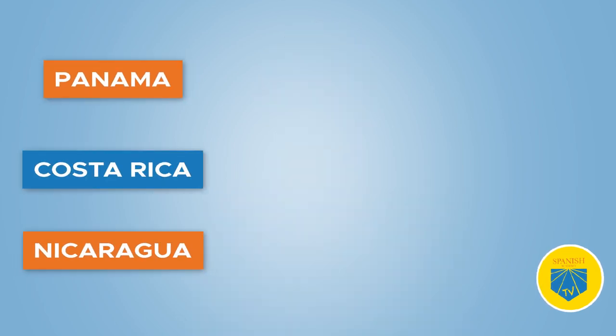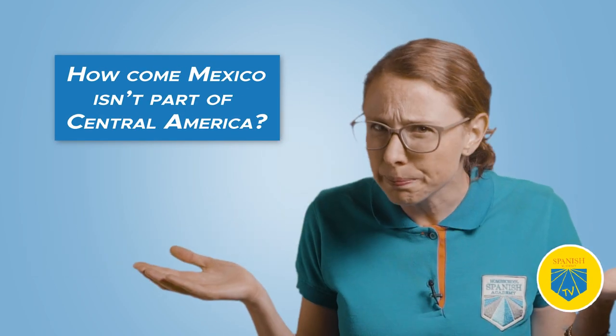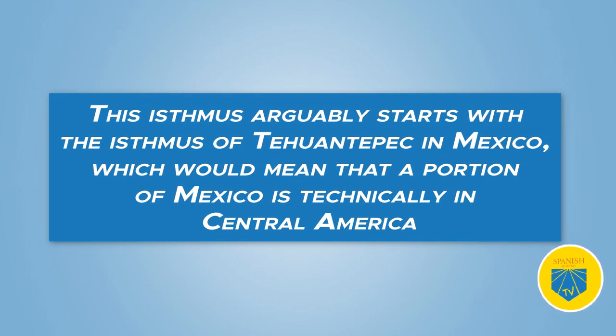Central America contains seven countries: Panama, Costa Rica, Nicaragua, Honduras, El Salvador, Guatemala, and Belize. So how come Mexico isn't part of Central America? Well, as we learned, Central America is a connecting isthmus. This isthmus arguably starts with the Isthmus of Tehuantepec in Mexico, which would mean that a portion of Mexico is technically in Central America. However, because it's a tiny fraction of the country of Mexico, the country is not considered part of Central America.